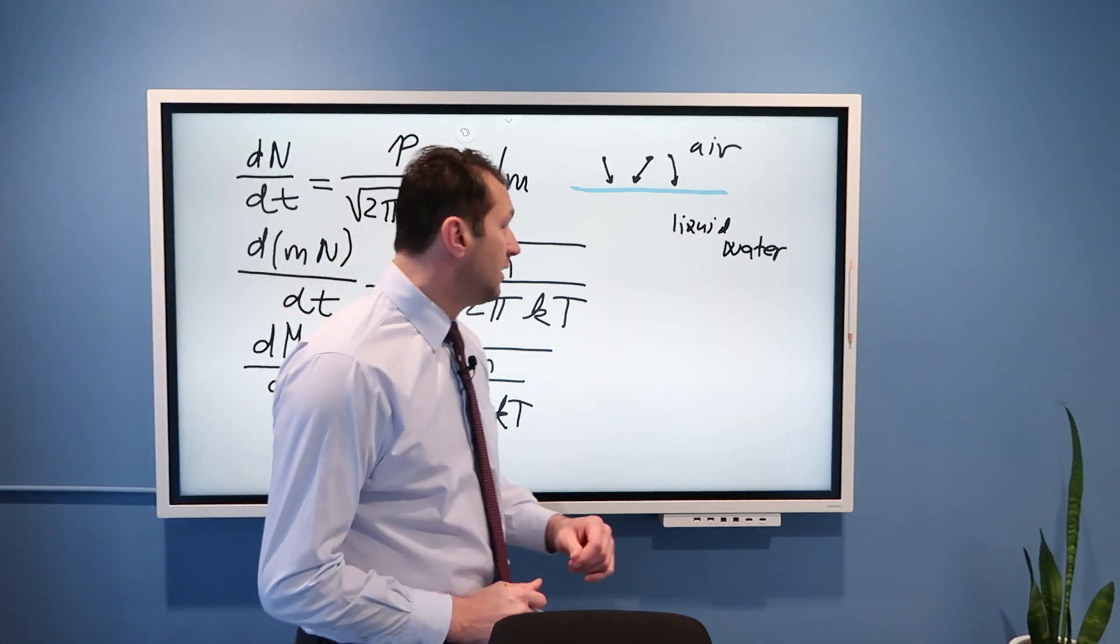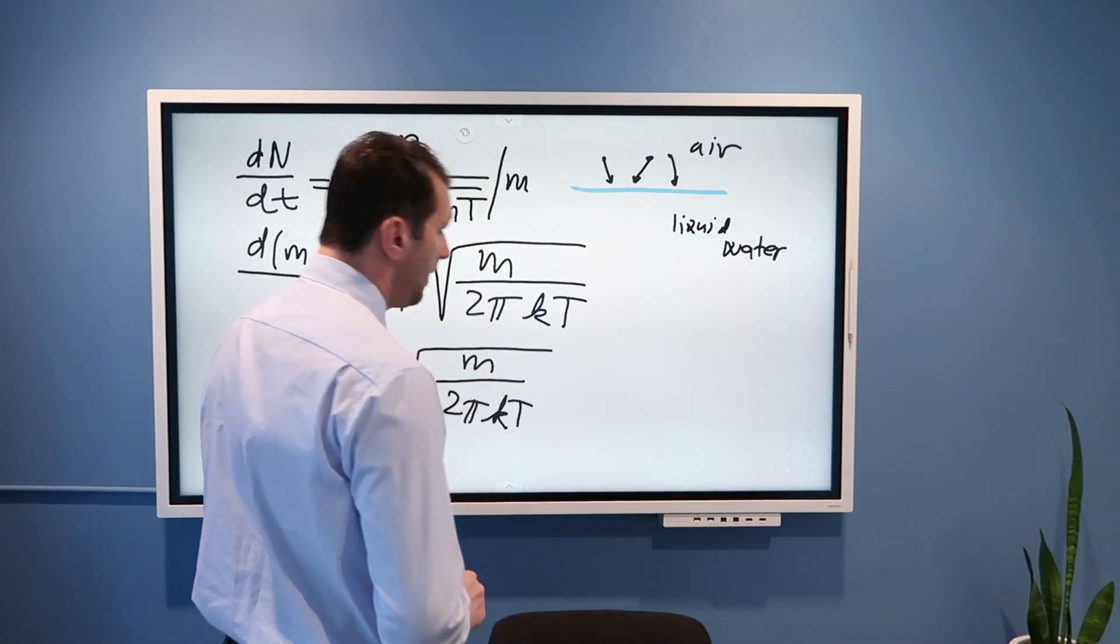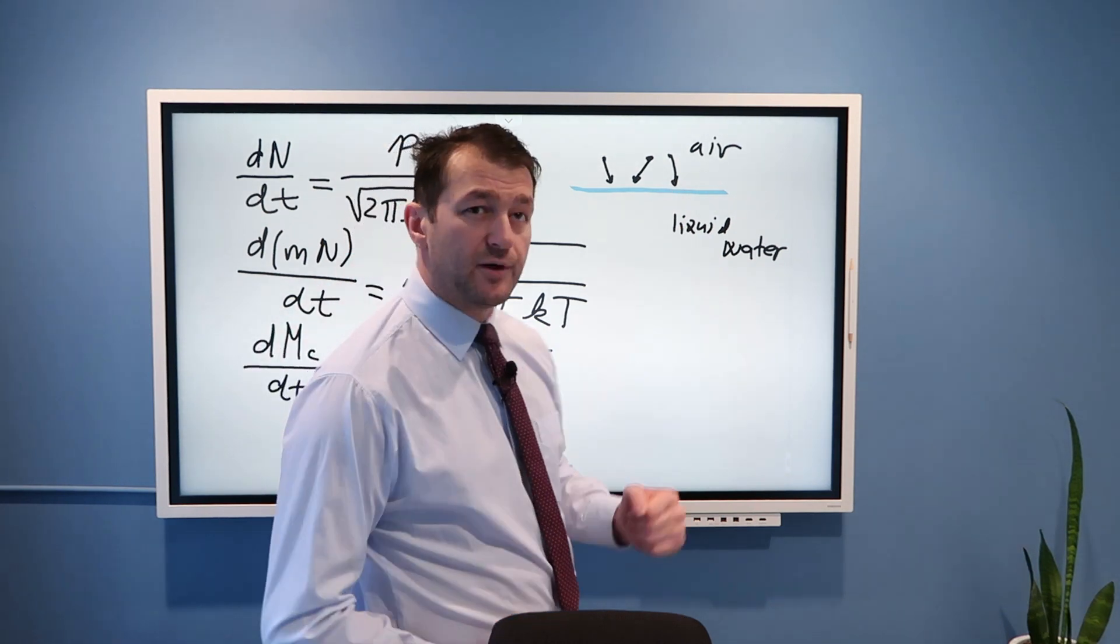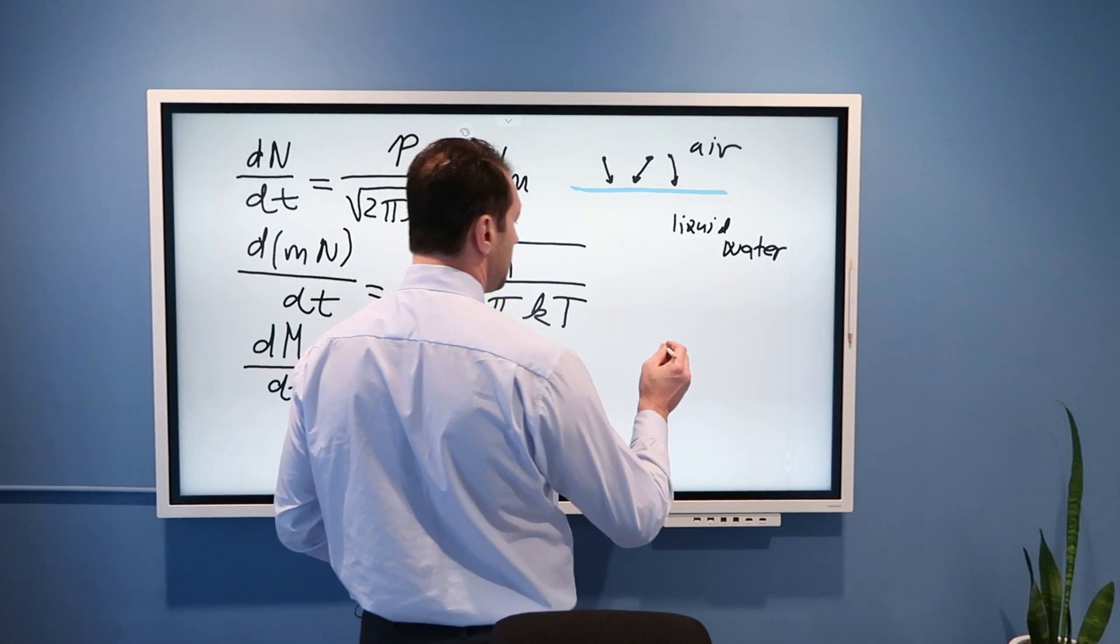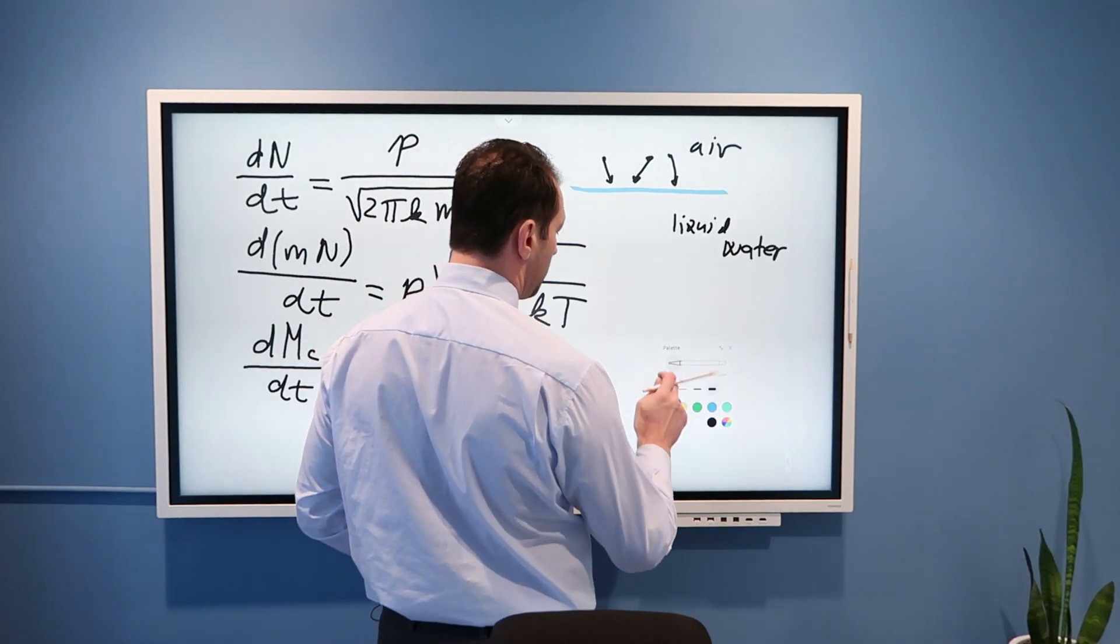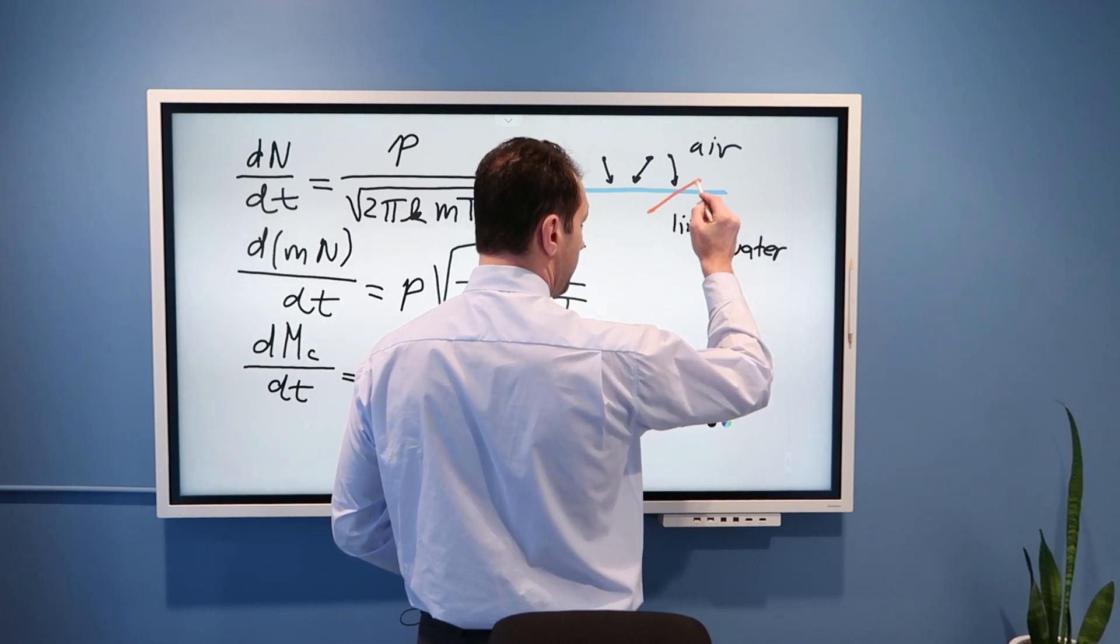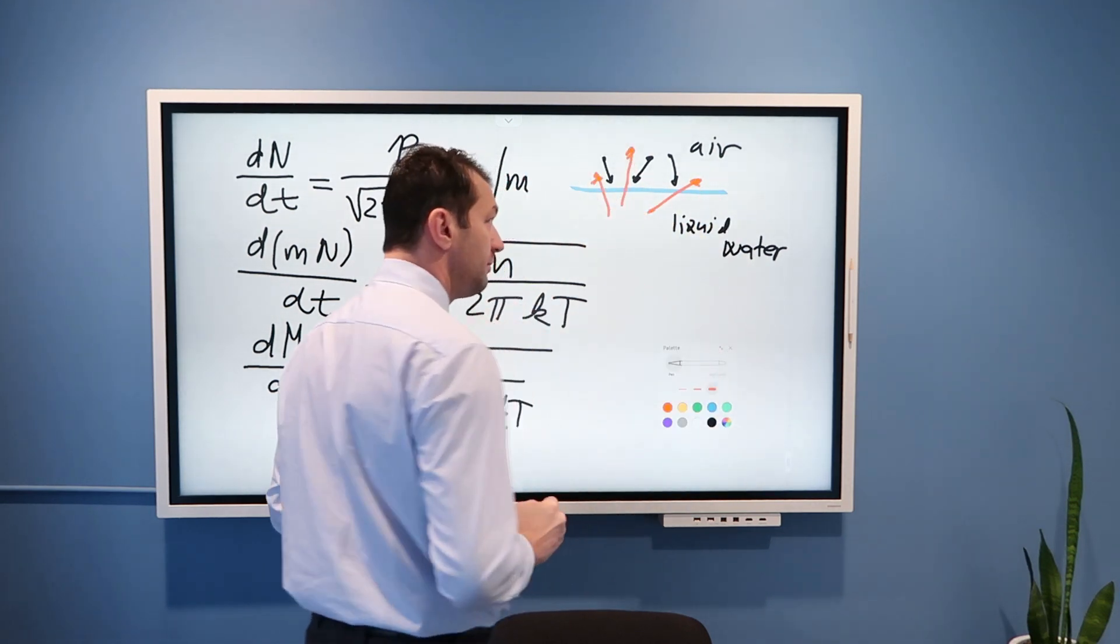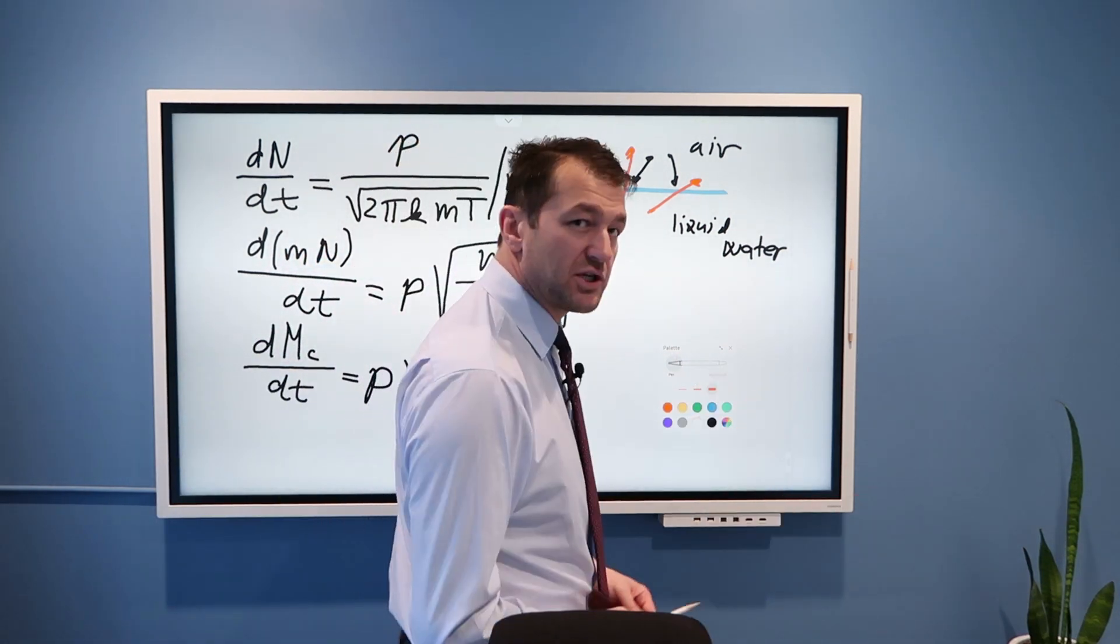So that's the first part of the story that Irving Langmuir proposed. And that basically means we dealt with the air, but now more difficult part. How do we deal with liquid water?